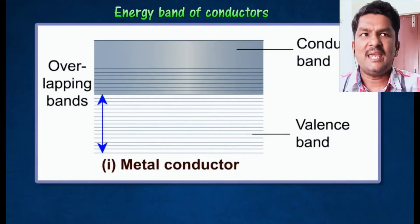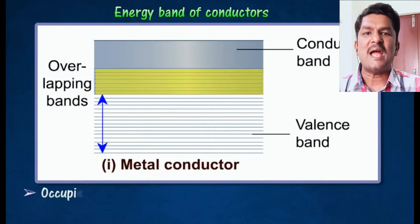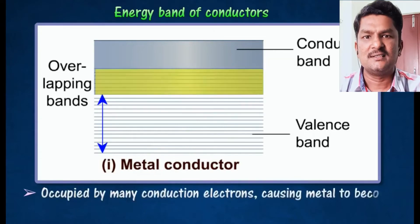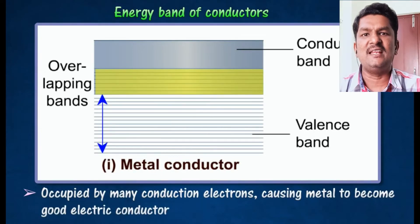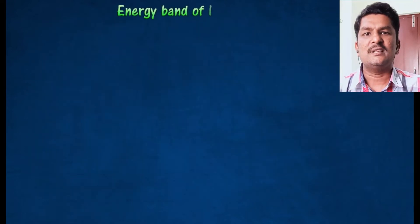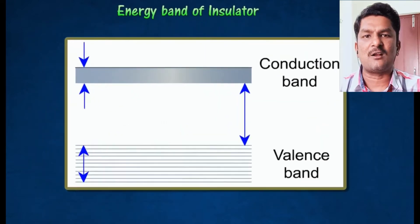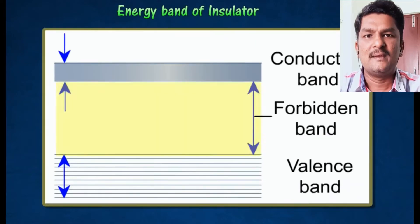In the case of conductors, the valence band and conduction band overlap with each other. There is no gap between the valence band and conduction band, so the number of available free electrons is more.